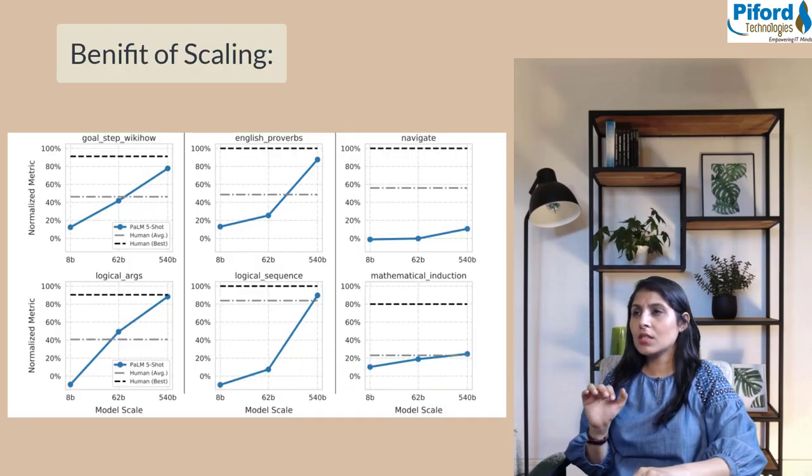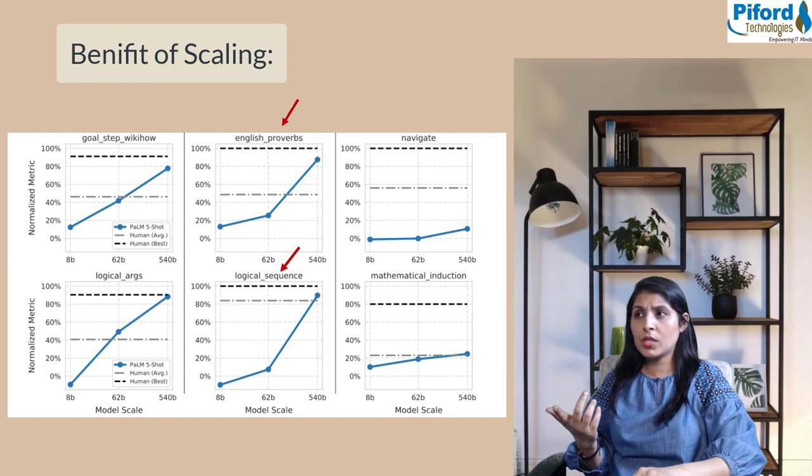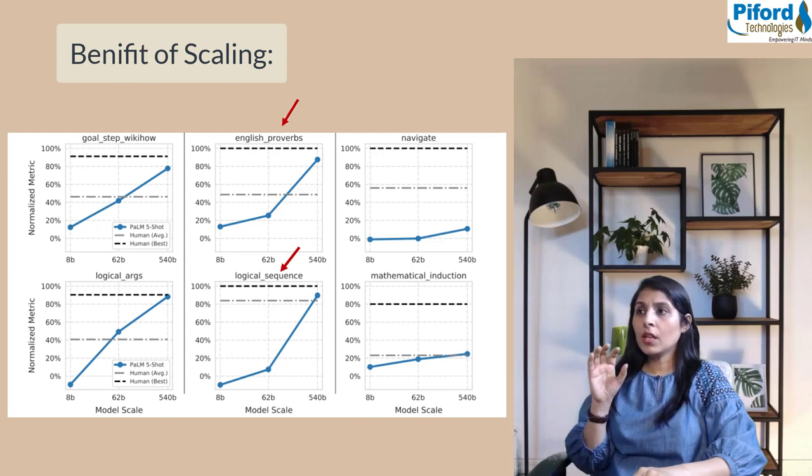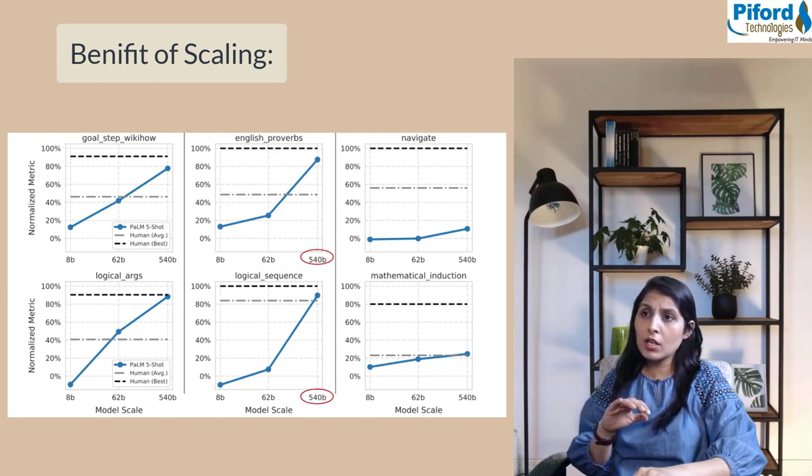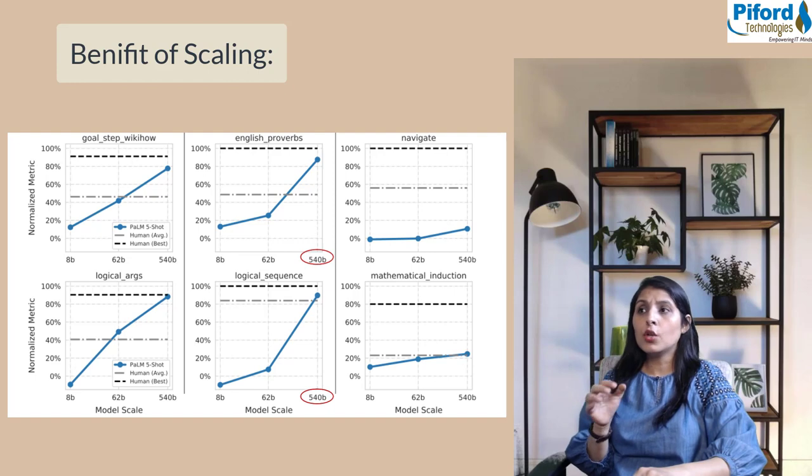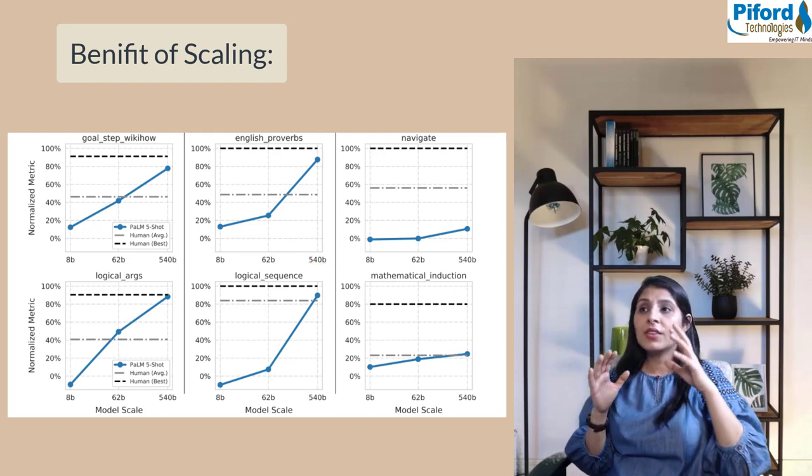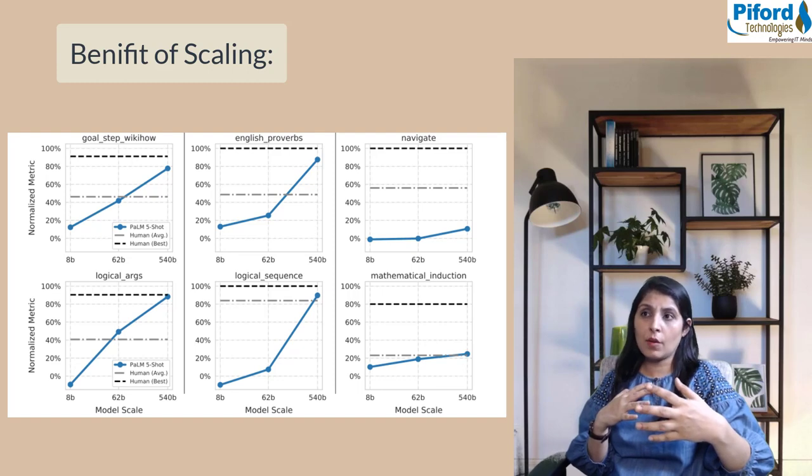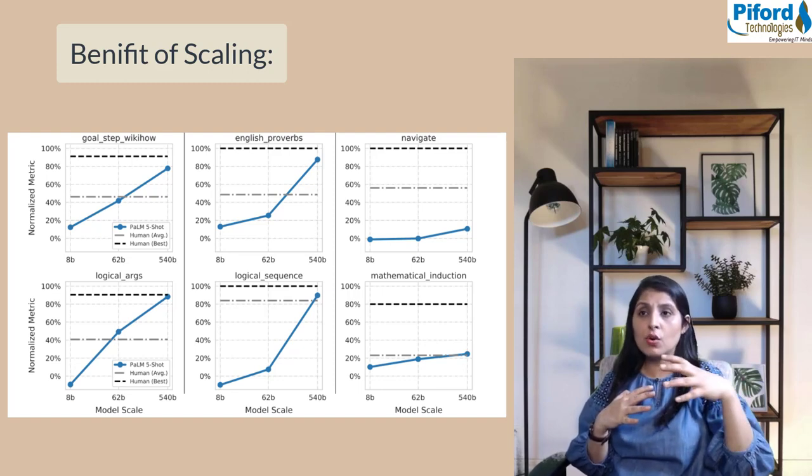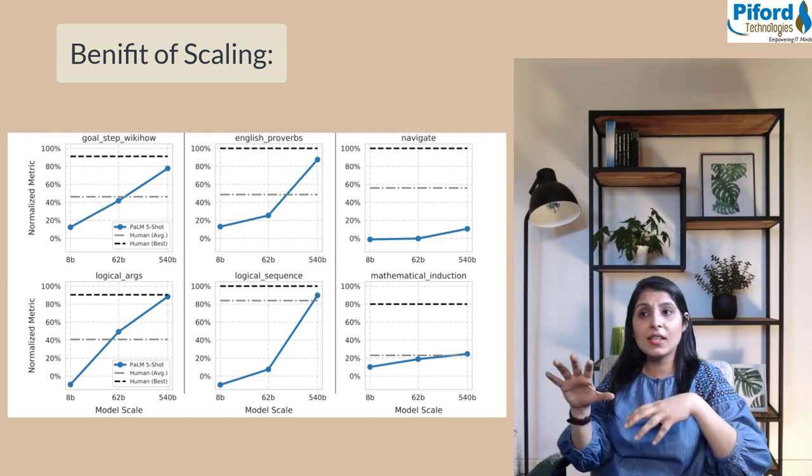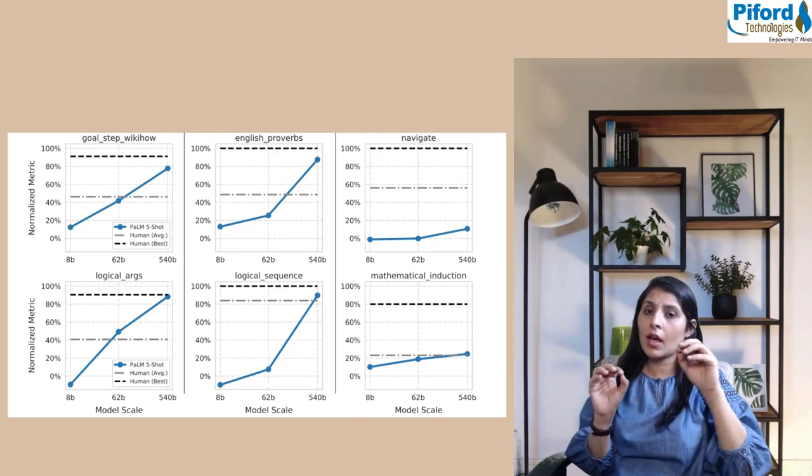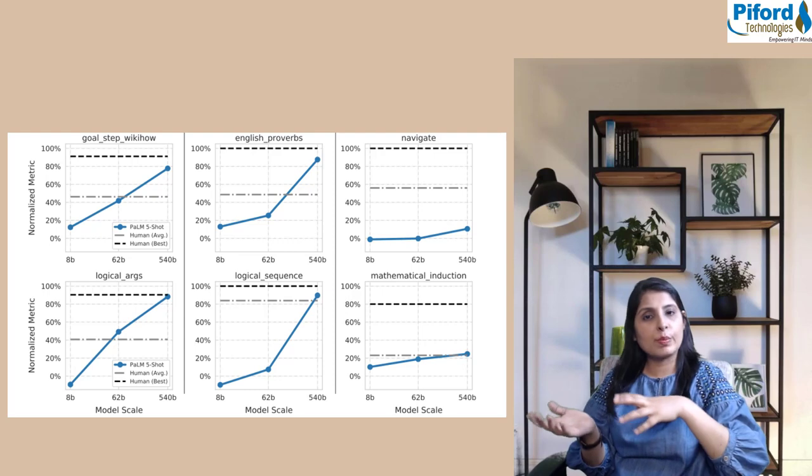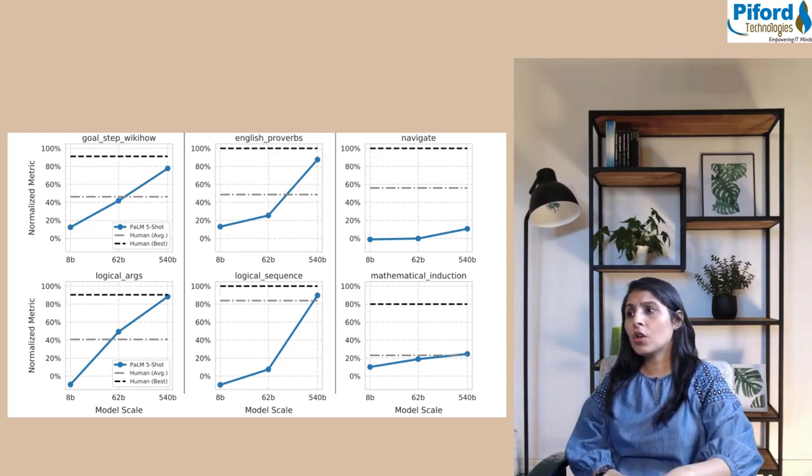After a certain model size, the model is able to do new tasks. When authors upscaled from 62 billion to 540 billion parameters, the model learned to work on these areas. This scaling unlocked the model's capability and achieved such good results because of the model's greatest scale when combined with chain of thought prompting, which increased accuracy by a large margin.